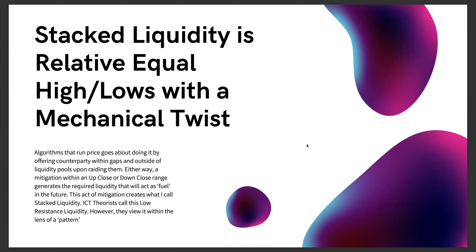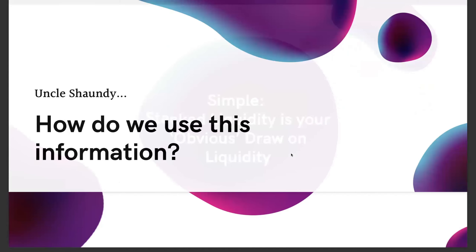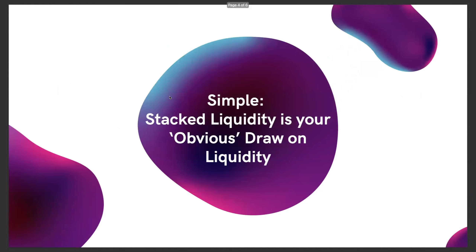ICT theorists call this low-resistance liquidity, but the problem is they view it within the lens of a pattern. It is not purely a pattern. So take a look — how do we use this information? Stacked liquidity is your obvious draw on liquidity.